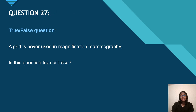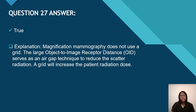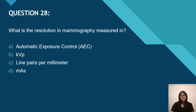Question 27 — true or false: a grid is never used in magnification mammography. It's TRUE. Magnification mammography does not use a grid. It has a large OID, or object-to-image receptor distance, which serves as an air gap technique to help reduce scattered radiation. A grid would increase the radiation dose to the patient.